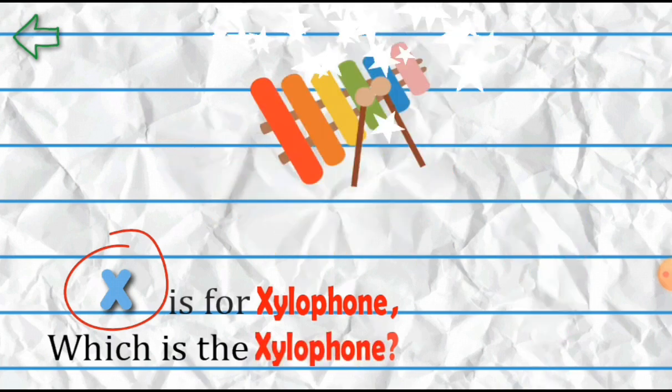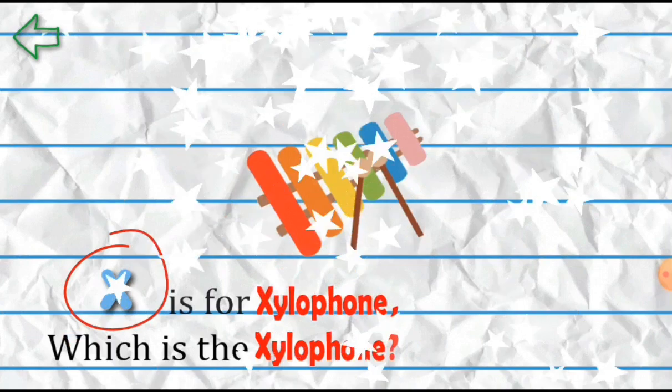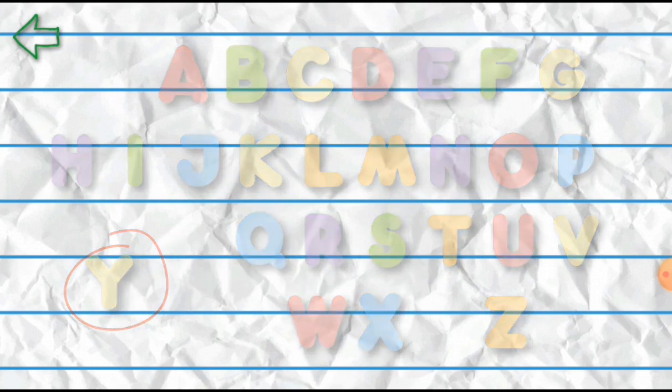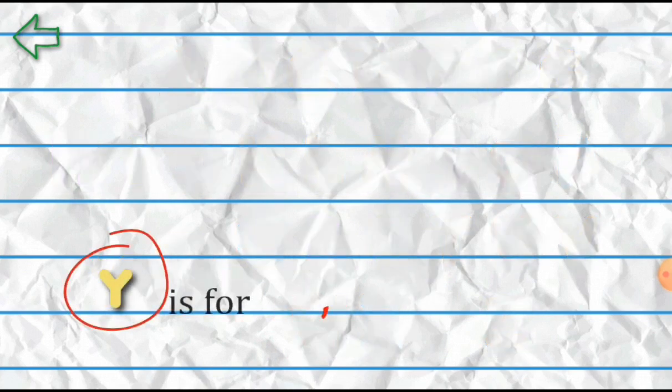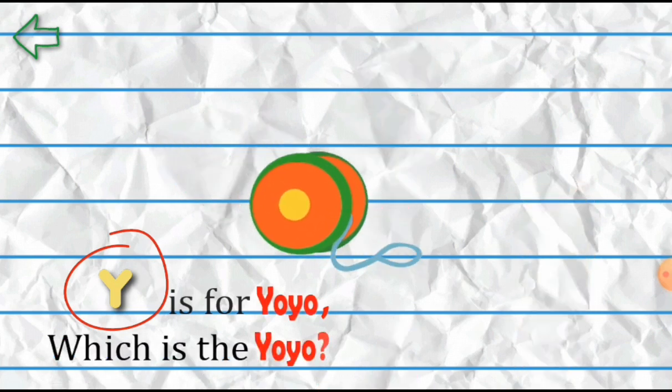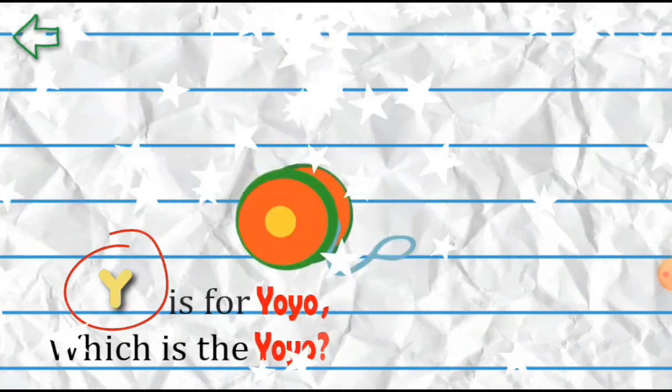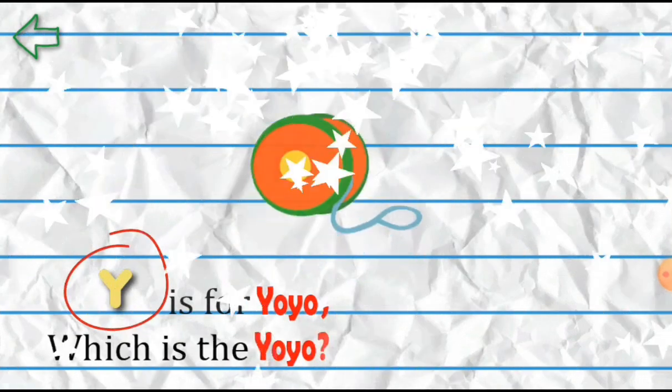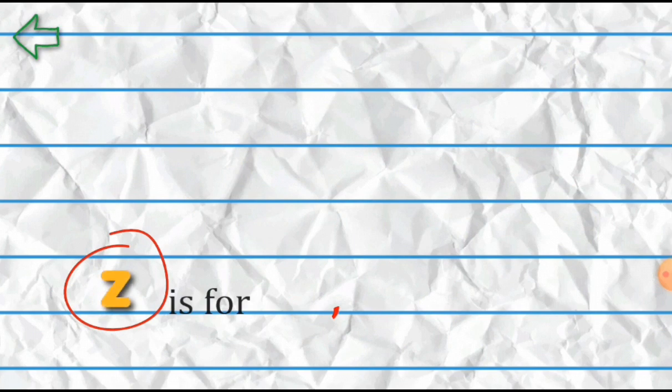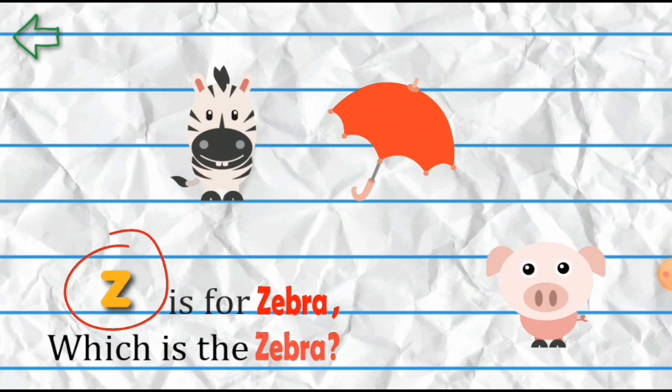Y is for Yoyo. Which is the yoyo? Z is for Zebra. Which is the zebra?